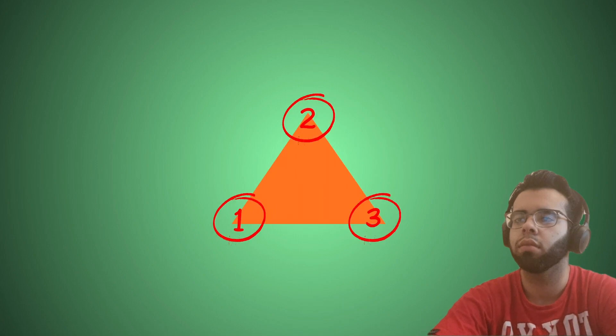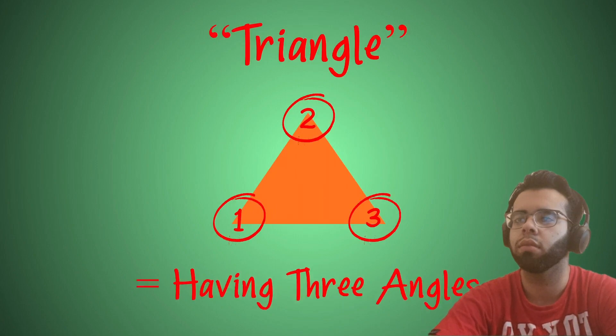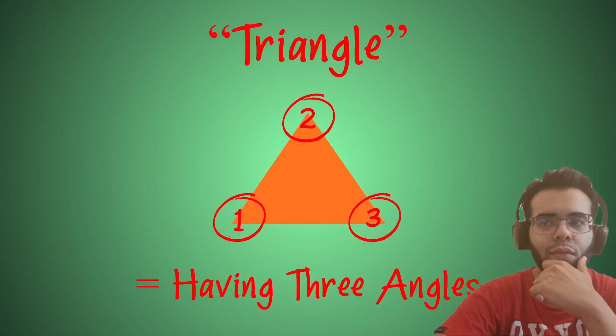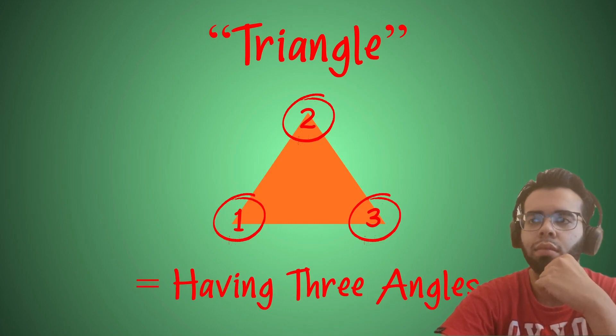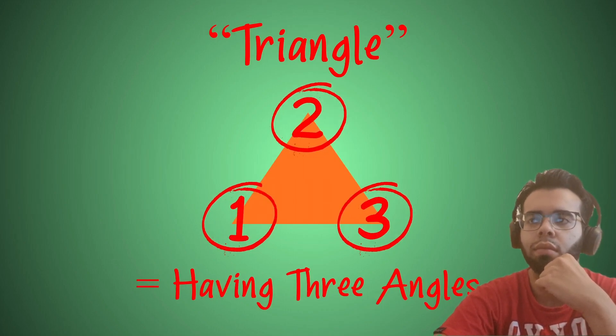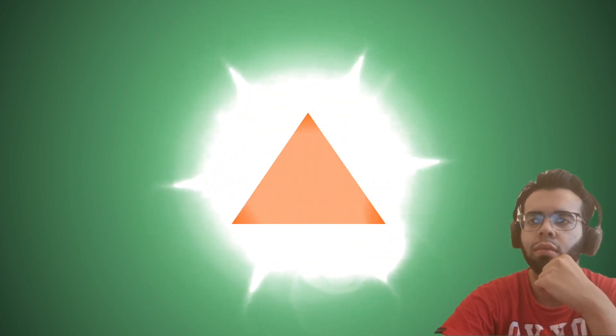The triangle's property of the number of angles cannot vary. It can never be anything other than three, because triangle means having three angles. By its very definition, a triangle is a thing that has three angles. This property of having three angles is explained by the very existence of there being a triangle.